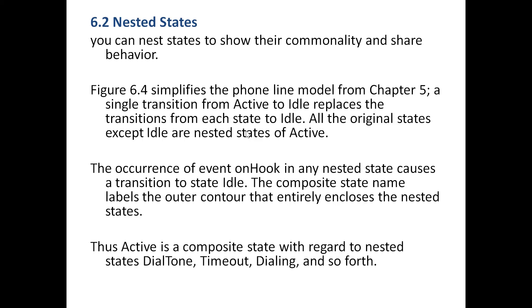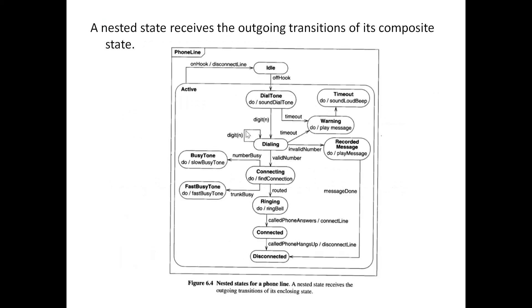For nested states, when you have commonality of behavior you can put those states inside another state. In the phone line active example, the 'active' state was not there originally, but to handle nested states all the sub-states — dialing, dial tone, connecting, ringing, connected, disconnected — are grouped inside 'active'. The phone line can either be idle or active, and output from any of these goes back to active. The idle state receives the outgoing transitions of its enclosing state.